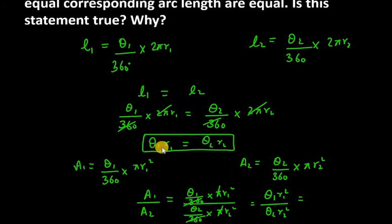So we know that θ₁r₁ and θ₂r₂ values are the same. Now how can we break this? θ₁r₁ × r₁ over θ₂r₂ × r₂. This is the same thing that we cancel.